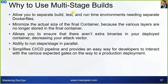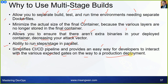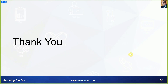The summary of why we use multi-stage builds: it allows you to separate build, test, and runtime environments without needing separate Dockerfiles. It minimizes the final container size because various layers are no longer stored in the final image. It ensures there are no extra binaries in your deployed container, decreasing the attack vector. It also allows steps or stages to run in parallel, simplifying CI/CD pipelines and providing an easy way for developers to interact with production deployment gates.